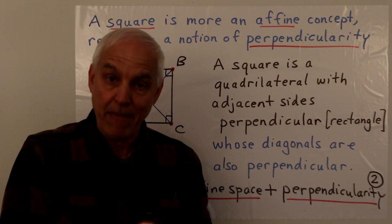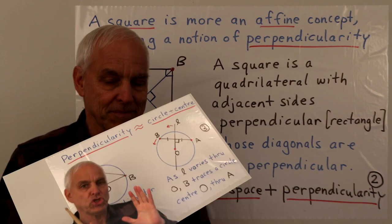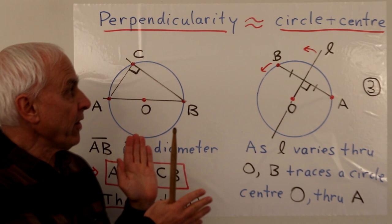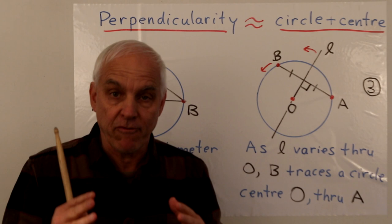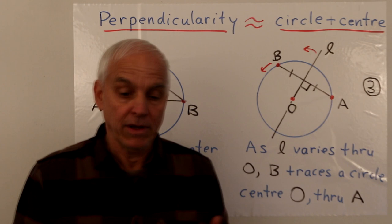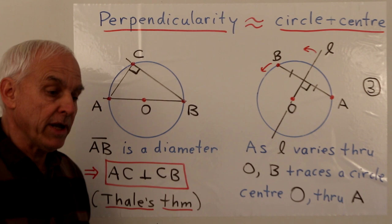To frame this famous math problem we really need to imbue our affine three-dimensional space with a suitable notion of perpendicularity. Geometrically, without going into the algebraic side of things, perpendicularity is pretty well equivalent to having a circle and its center. So if we know here is a circle and here is its center, then we basically have perpendicularity, and conversely, if we have perpendicularity then we can create a circle around a point.